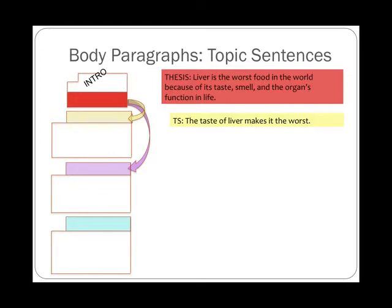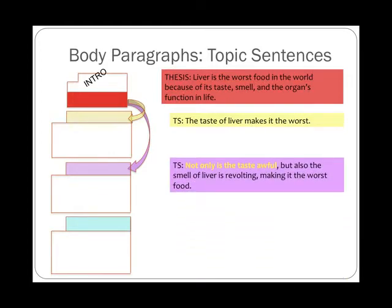Then our second body paragraph — we're going to transition to link it back to the reason we were just talking about, which is the taste. And we're going to reword the second topic sentence. So again, we have the topic, claim, and the reason. The example here is: 'Not only is the taste awful' — see how I'm linking it back to the first one — 'but also the smell of liver is revolting, making it the worst food.' So again, we identify the topic (liver), the claim that it's the worst, and the reason, which is smell. And I've also linked it back to the first reason.